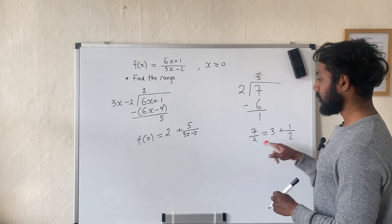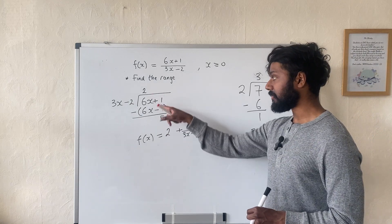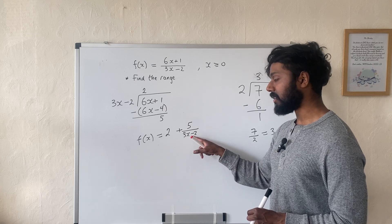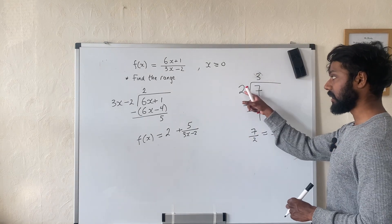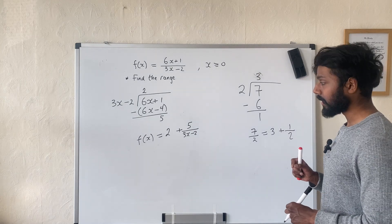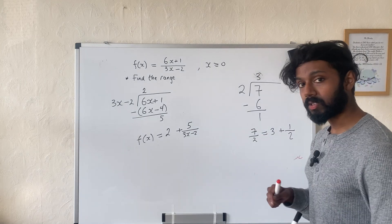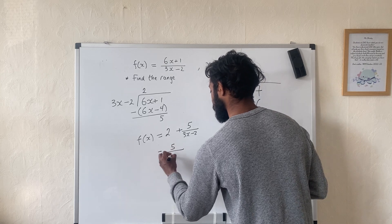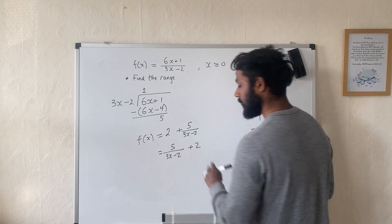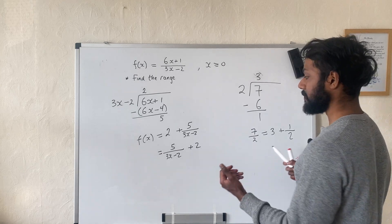Similarly, I've got my 2 that came from the division and my remainder of 5 which I write over my original divisor, like I wrote 1 over the original thing that I divided by which is 2. Okay, why is this useful? Well first of all I'm going to write it as 5 over 3x minus 2 plus 2. And then I'm going to talk about asymptotes.